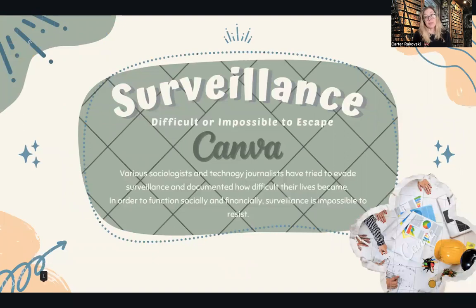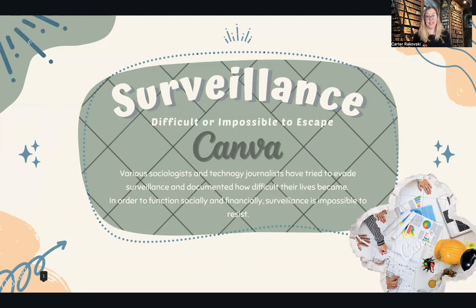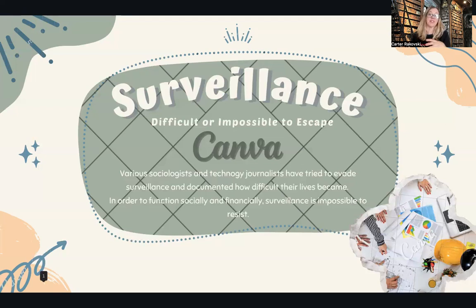Surveillance can be difficult — maybe impossible — to escape. Several sociologists have tried. One example was a sociologist who was pregnant and tried to keep it from social media and tech companies. She had to constantly monitor her social media so no one posted anything about it, didn't have pictures showing her pregnancy, turned off tracking on her phone when going to doctors, didn't have a registry for Amazon or Target, and had to buy things through gift cards with cash so nobody could track what kinds of things she was buying online. This became really difficult and was kind of like a full-time job just trying to hide this.